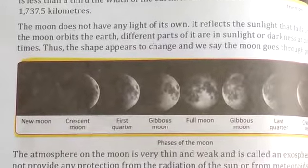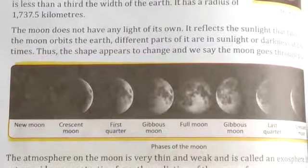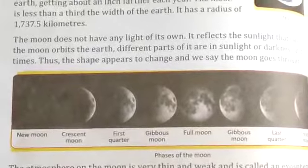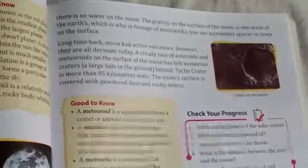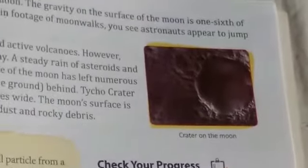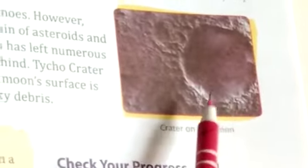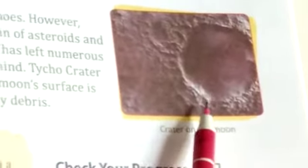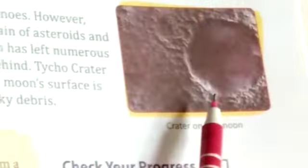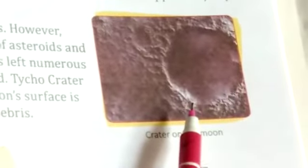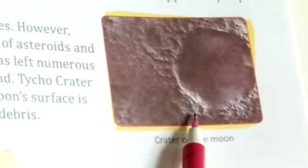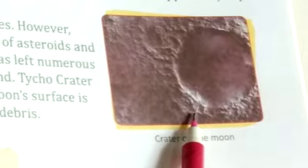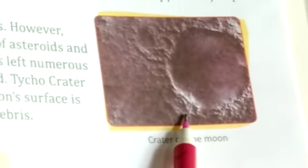However, all the volcanoes are now dormant. Today, a steady rain of asteroids and meteorites on the surface of the Moon has left numerous craters. A crater means a large hole dug in the ground. Tycho Crater is more than 85 kilometers wide. The Moon's surface is covered with powdered dust and rocky debris.